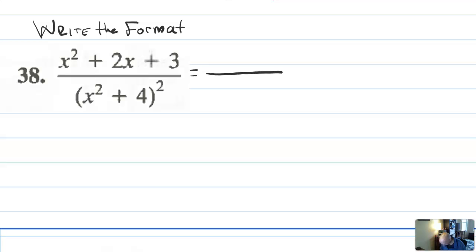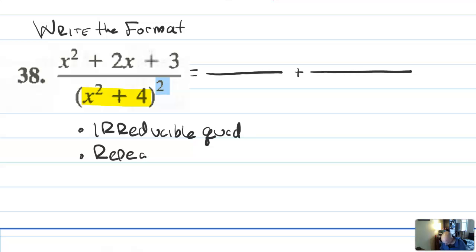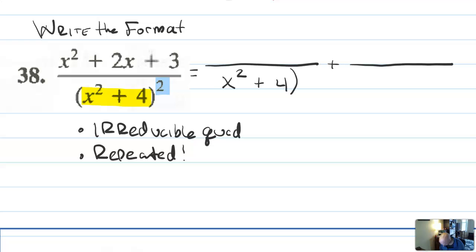So if I was going to write the format of this, I'm still going to split it into two fractions. And I notice that I have two things here. I have both an irreducible quadratic. But I also notice that it's repeated. And so I also have to use the rule about repeated factors from before. So the first factor I'll write as x squared plus four on the bottom. And the second factor I'll write as x squared plus four squared. So this square right here is because that was a repeated factor.